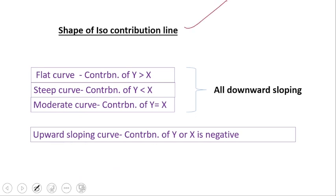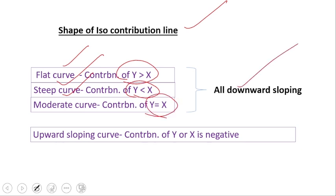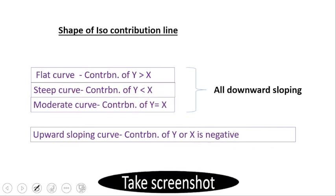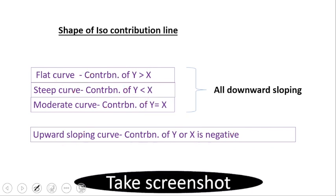Summary of iso-contribution line shapes: flat curve when the contribution of Y is greater than X; steep curve when contribution of Y is less than X; moderate curve when contribution of Y equals X — all three are downward sloping. An upward sloping curve occurs when the contribution of X or Y is negative. Please take a screenshot of this summary.